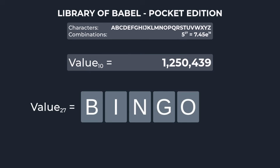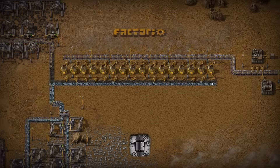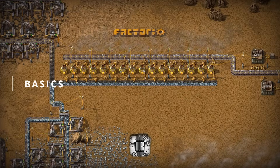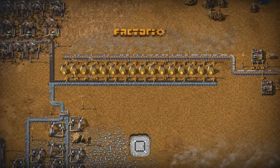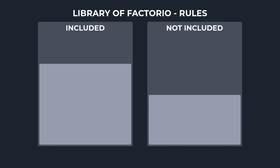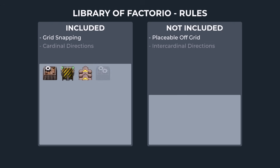This is essentially how the Library of Babel operates, so let's see if we can apply this to Factorio. First, let's set some restrictions on what will be allowed for our generation algorithm. Factorio is full of tons of different complexities that make for a great game, but many of which will be out of scope for this project. For now, we will restrict this to entities that snap to the grid and can only be rotated in the four cardinal directions.